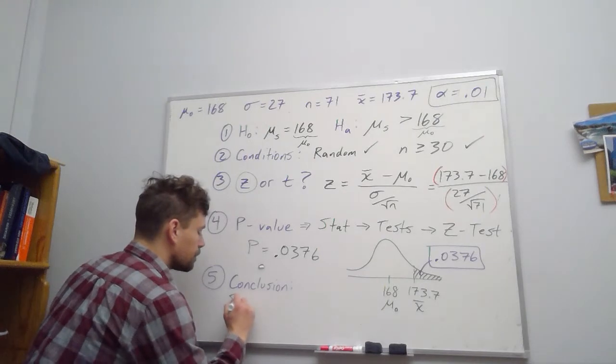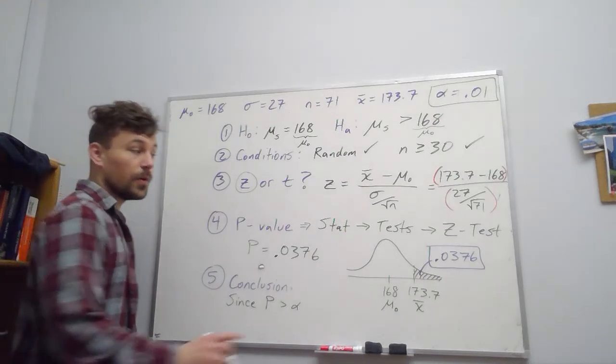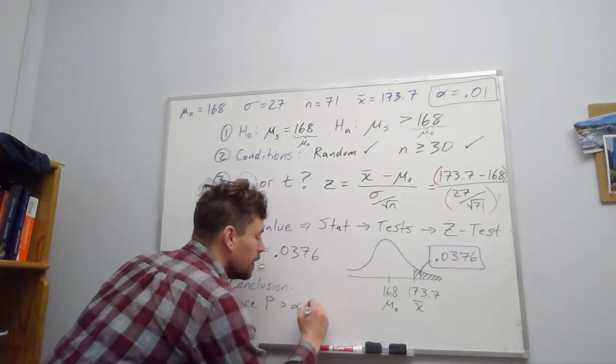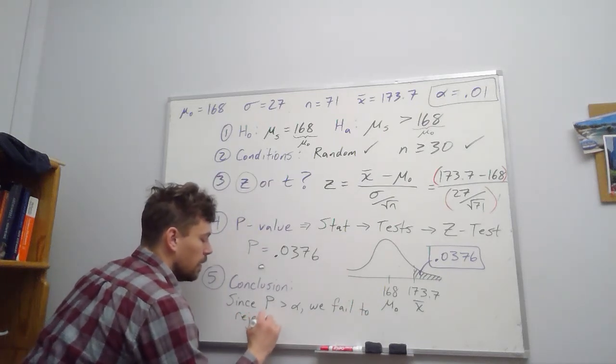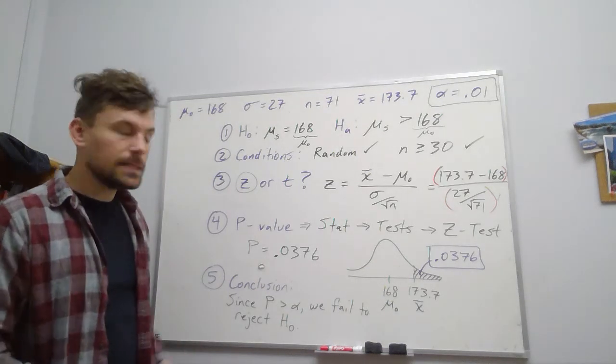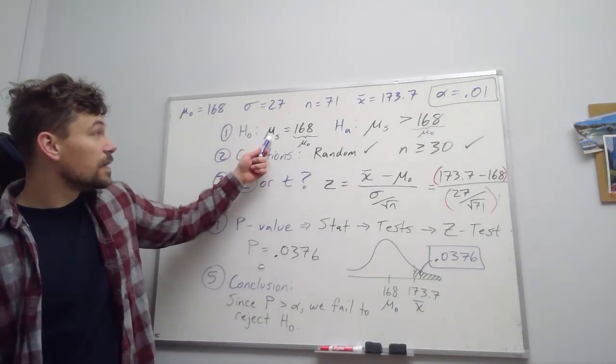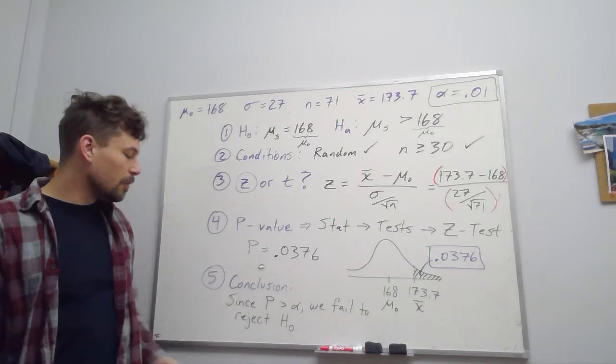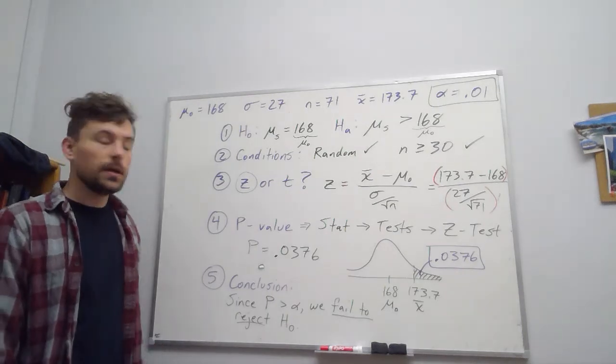So since p is greater than α, right? So our p-value is not rare enough, it's bigger than the cutoff that we set. Since p is greater than α, we fail to reject the null hypothesis, right? We can add a little bit more context to that. We can say we fail to reject the null hypothesis that the mean for sedentary folks is 168. Again, we can give that a little bit more life, but our two options are do we reject or fail to reject the null hypothesis.